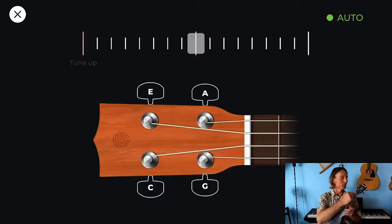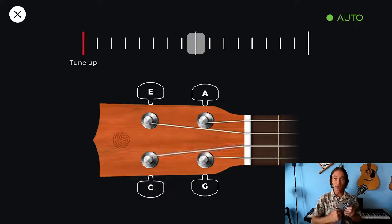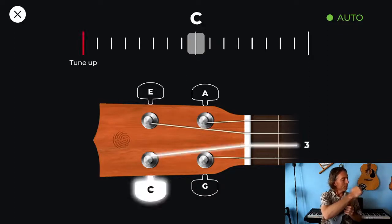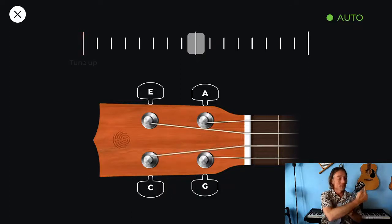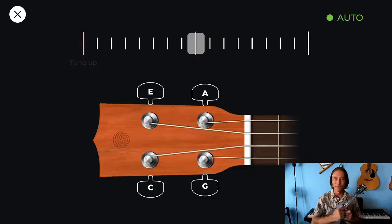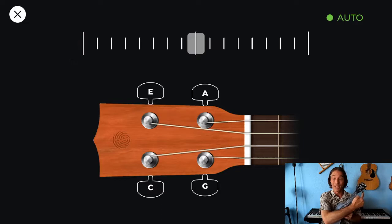The second string, or the next string down, is the C string, and it's the space below, and it's connected to the tuning gear that is the next highest on the one that's closest to my face. The third string here is the E string, and that string is connected to the tuning gear that is a little bit farther away on the other side. It's on top. And then the last string is the A string, and the A string is the one closest to the floor, and that string is connected to the gear that is on the bottom farther away.